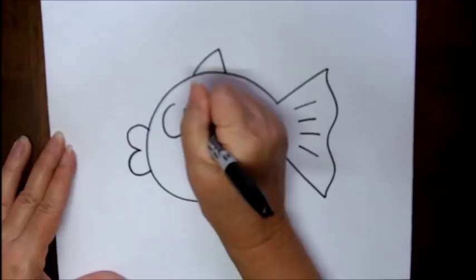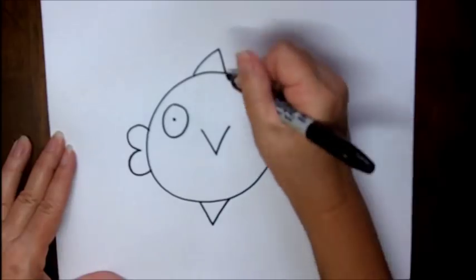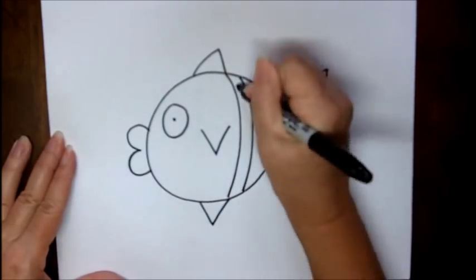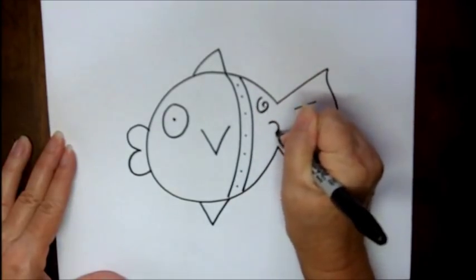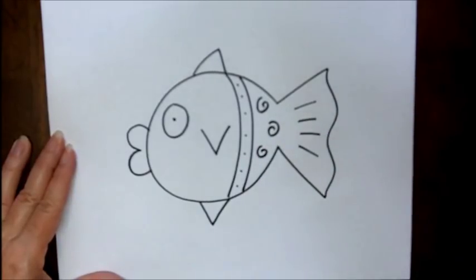Add an eye which is a circle and a dot, and then you can decorate your fish any way that you'd like. You might want to put some lines, some dots, some swirls. That's the fun part about these fish. You can decorate them any way that you want.